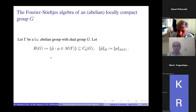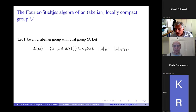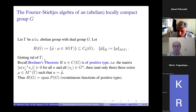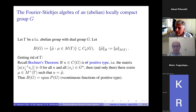Again I can transfer the norm — the total variation norm of the complex regular Borel measure — back to the function algebra B of G, defining the norm of the Fourier transform to be the norm of mu. And again, I want to express this without using the dual group gamma.